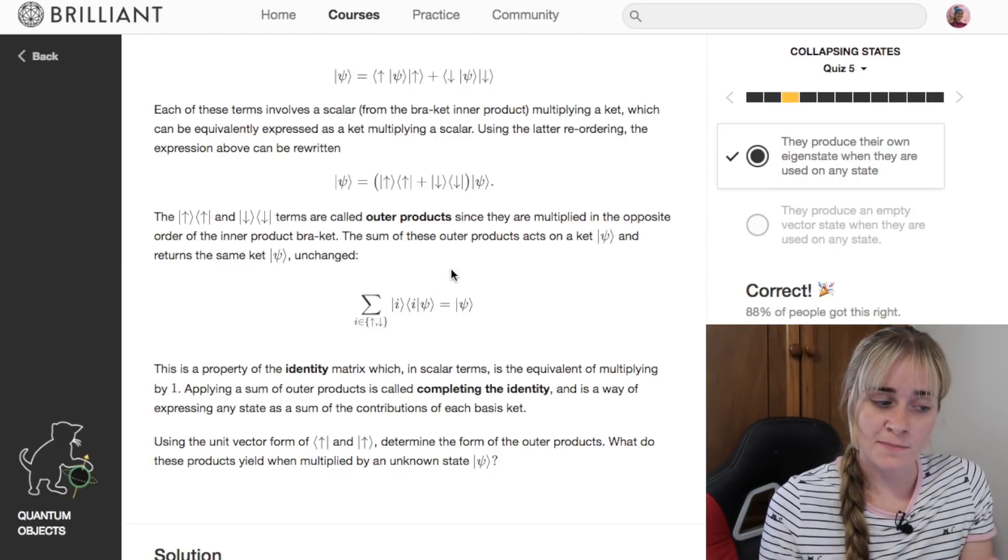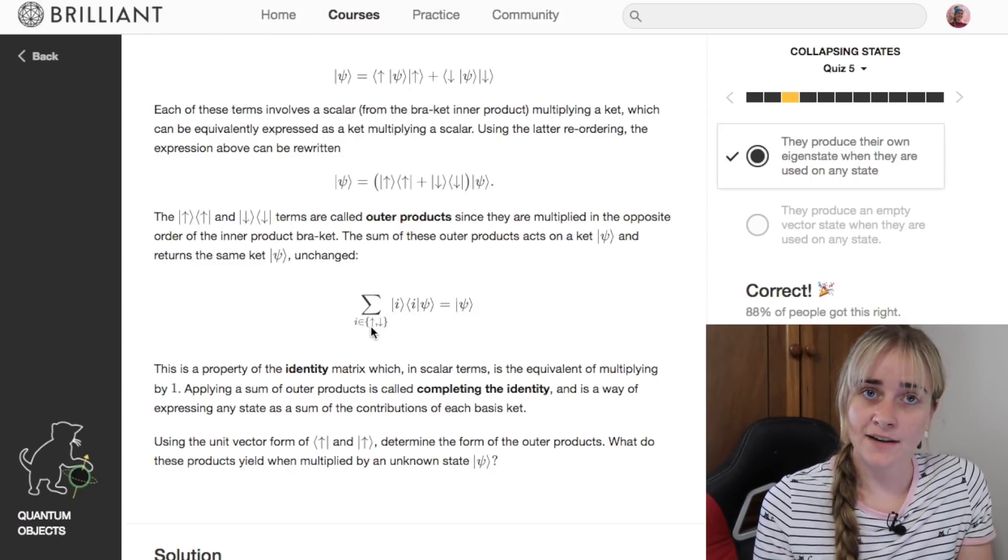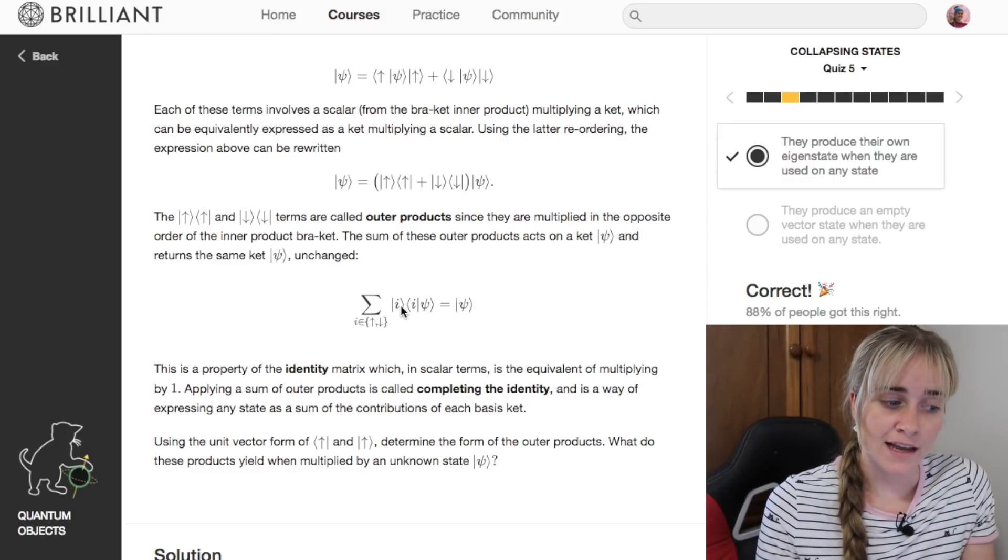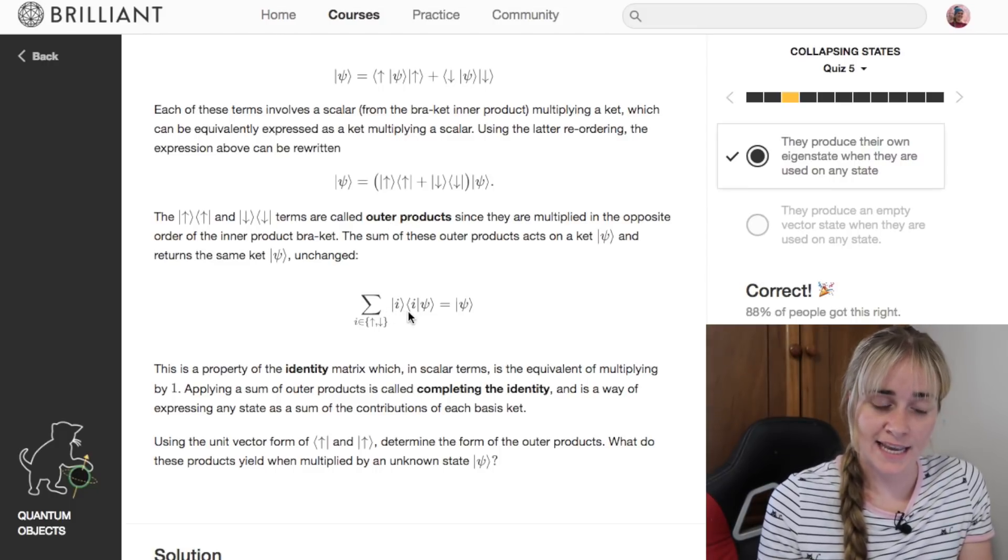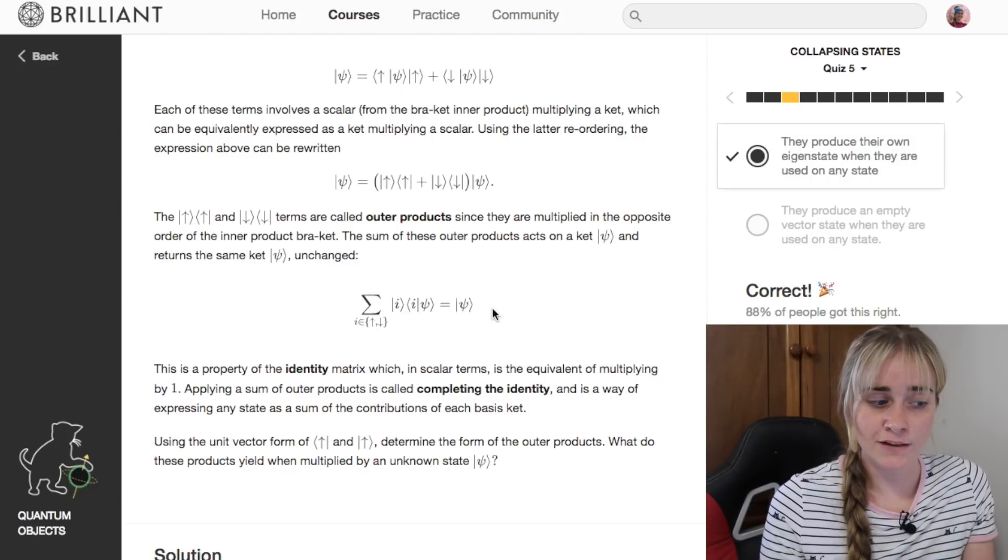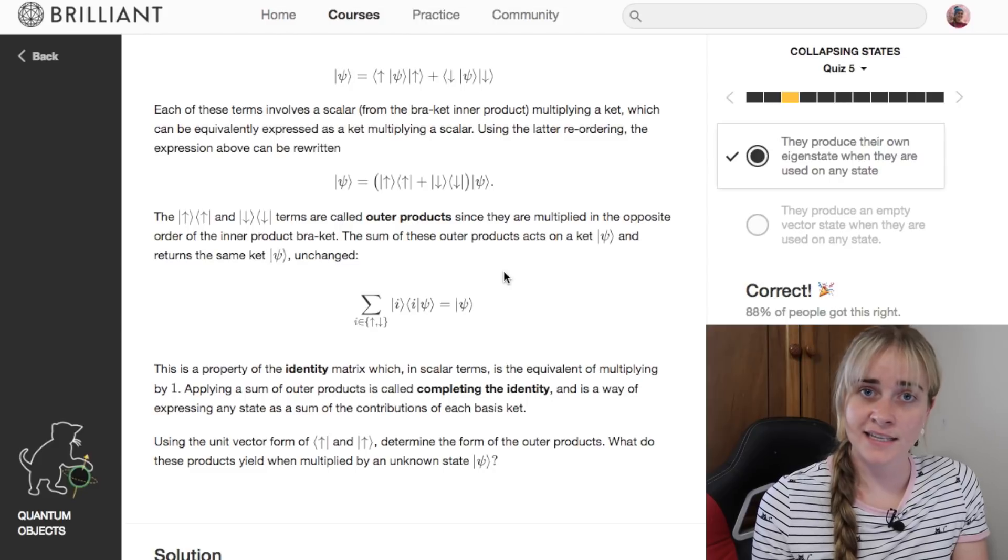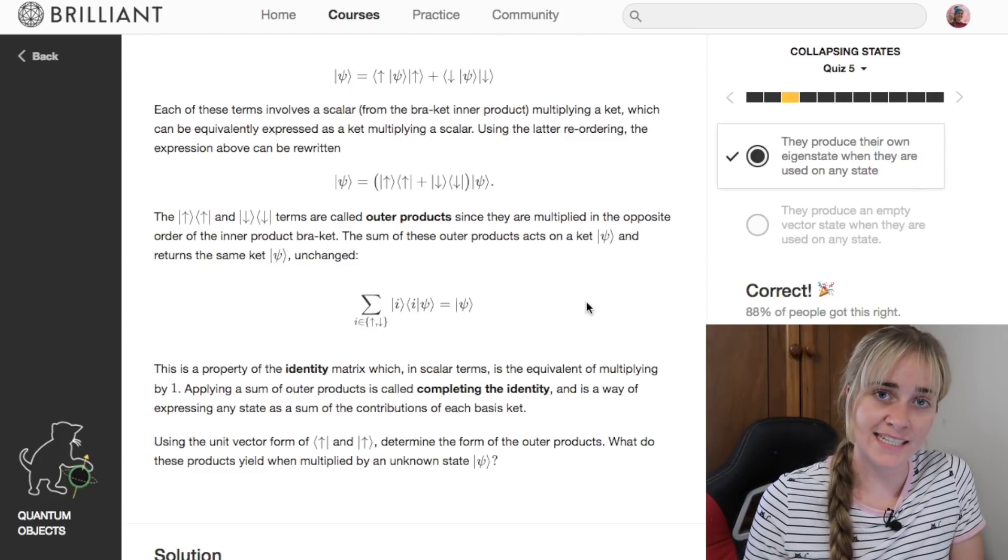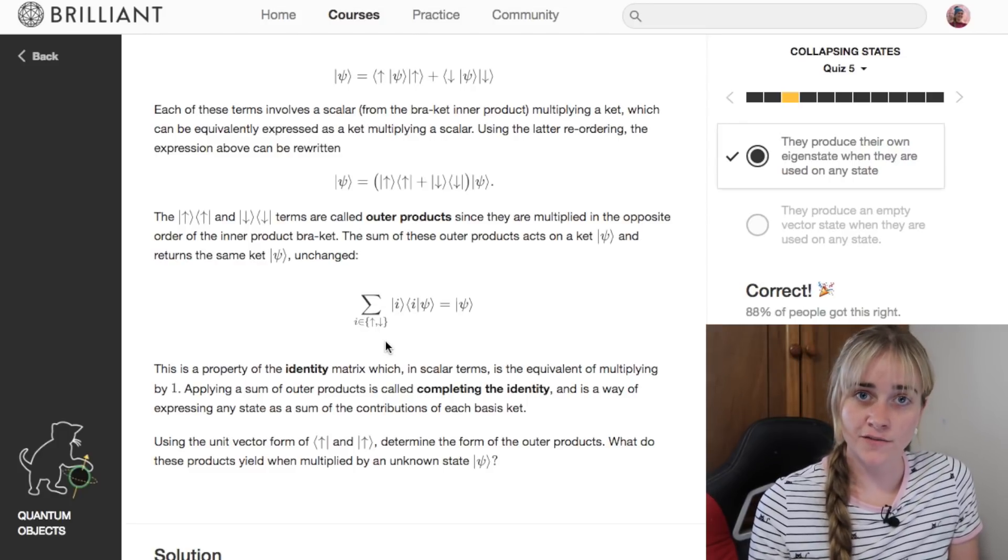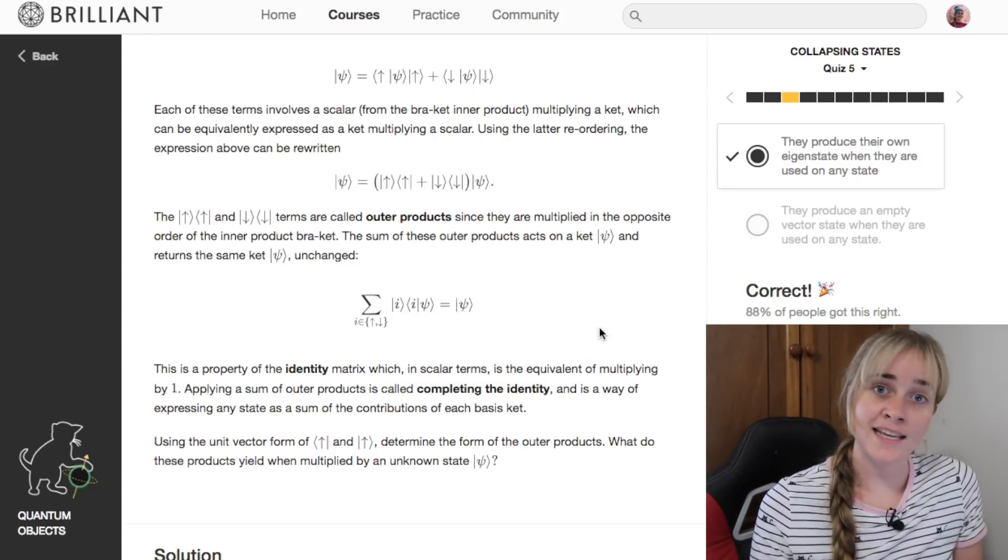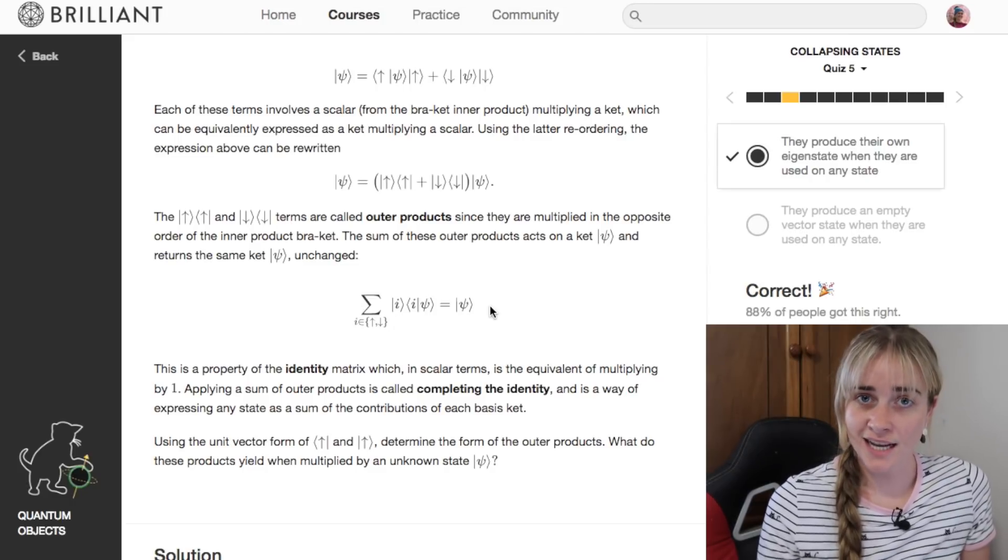That's if you have the sum of all the outer products over your basis. Here we're representing i as a placeholder, and our basis in this case is up arrow and down arrow. So if we have up arrow up arrow times the ket plus down arrow down arrow times the ket, we just end up with the ket itself. We've summed over our entire basis and we get the same ket out at the end unchanged. The reason is because multiplying by the sum of the outer products over the whole basis is like multiplying by the identity or multiplying by one.